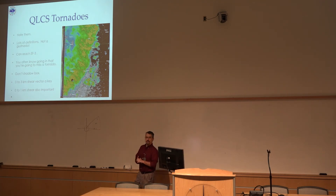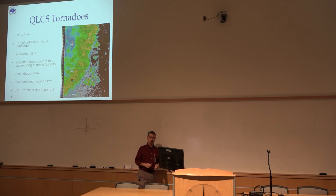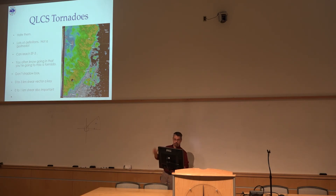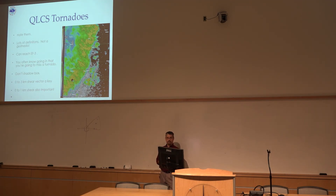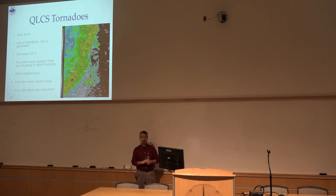One thing is they are not called gustnadoes, like you see on some media outlets. QLCS tornadoes are part of the thunderstorm — they have a connection being vented through the thunderstorm cell itself. A gustnado is just out on the gust front by itself, something lower end. QLCS tornadoes can reach EF3 in intensity. We've had EF2 tornadoes in the Tulsa forecast area that were QLCS tornadoes. They're not necessarily brief or weak — they can be pretty significant.